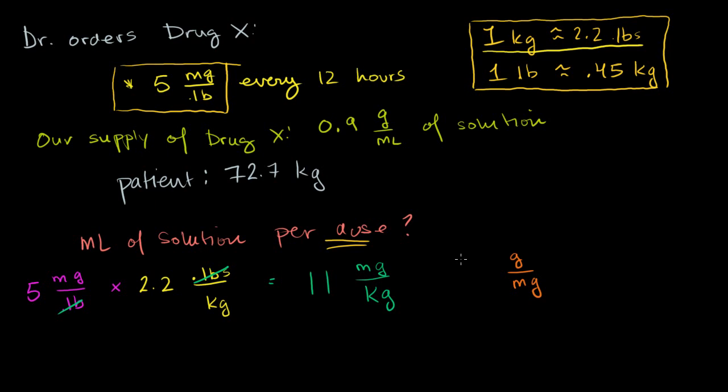So how many grams are there per milligram? And you can just think it through. There's 1 gram per 1,000 milligrams, or 1,000 milligrams per gram. And you just multiply it out. So the milligrams cancels with the milligrams. And then we get, this is equal to 11 over 1,000 grams per kilogram.